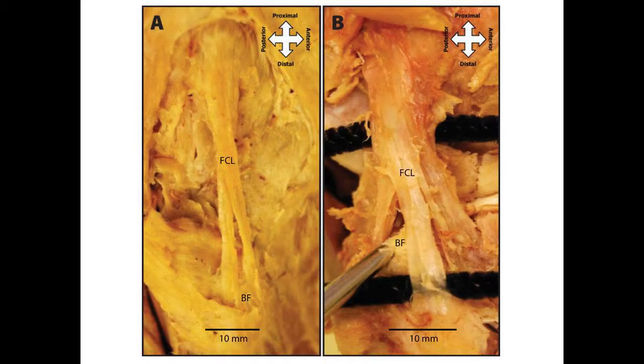Two Fibular Collateral Ligament variations were found: a bifurcate ligament with two distal bands and a trifurcate ligament with three distal bands, all of which attached to the fibular head.